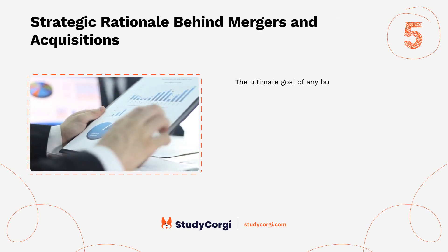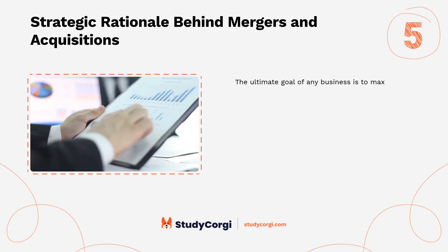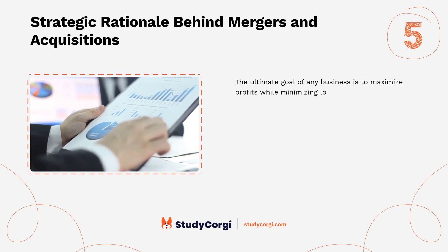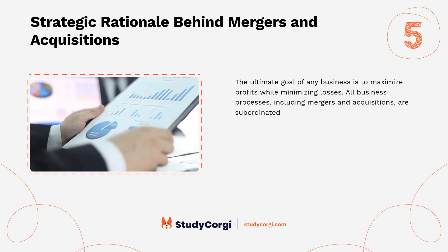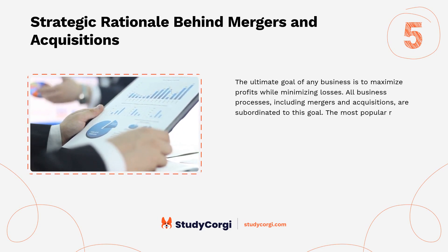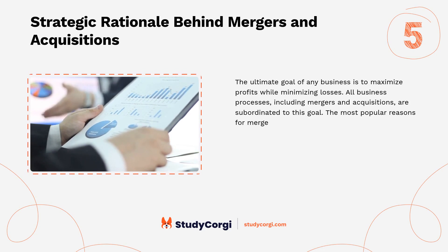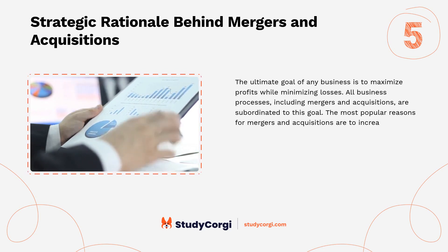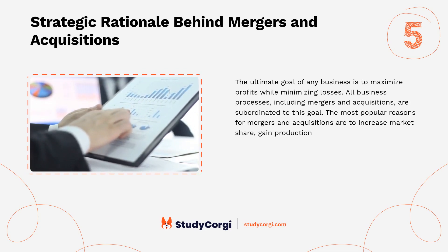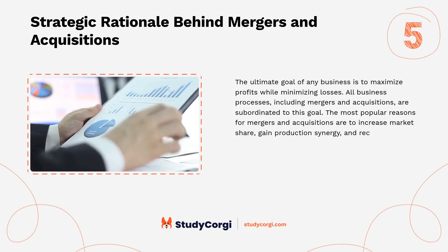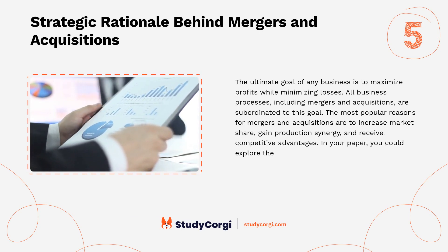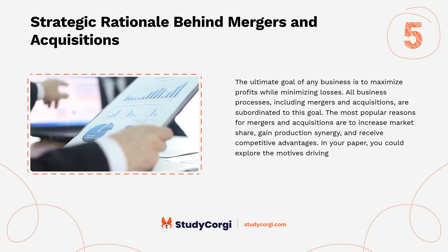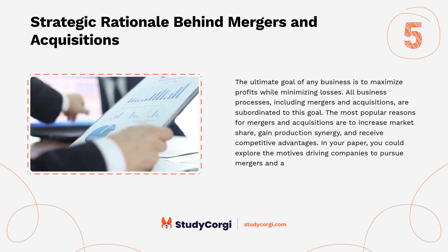Strategic rationale behind mergers and acquisitions. The ultimate goal of any business is to maximize profits while minimizing losses. All business processes, including mergers and acquisitions, are subordinated to this goal. The most popular reasons for mergers and acquisitions are to increase market share, gain production synergy, and receive competitive advantages. In your paper, you could explore the motives driving companies to pursue mergers and acquisitions.